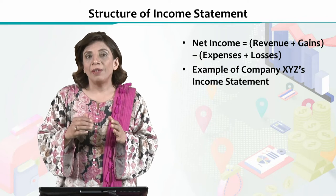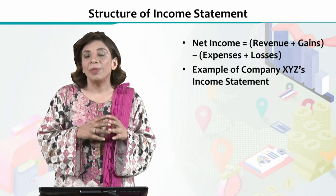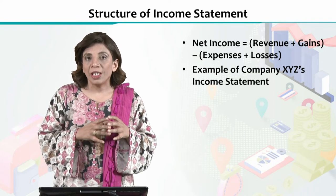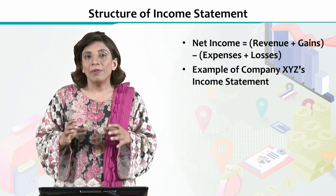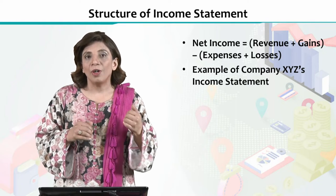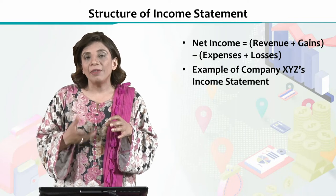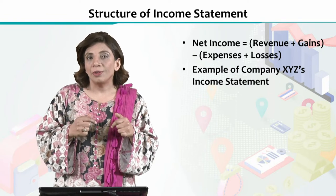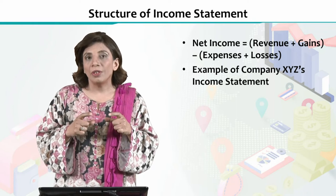We are going to consider all the different types of revenues, then the gains, add them up, and then consider all the various types of expenses — whether incurred on the primary activity or the secondary activity. All the various types of expenses are to be accounted for, along with the losses. That sum is subtracted from the sum of revenues and gains to get the net income.